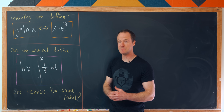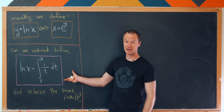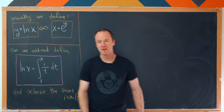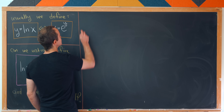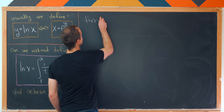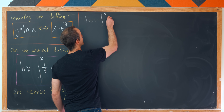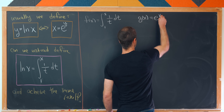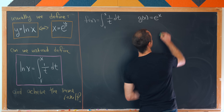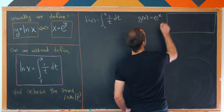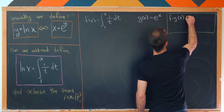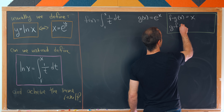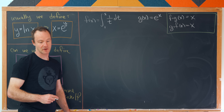By 'the same result' I mean: is this natural log defined in terms of the antiderivative actually the inverse of our exponential function? Let's introduce some notation. Set f(x) equal to the integral from 1 to x of 1/t dt, and set g(x) equal to the exponential function. What we're trying to show is that f composed with g is the identity function — f∘g(x) = x — and also that g∘f(x) = x, giving us true invertibility.